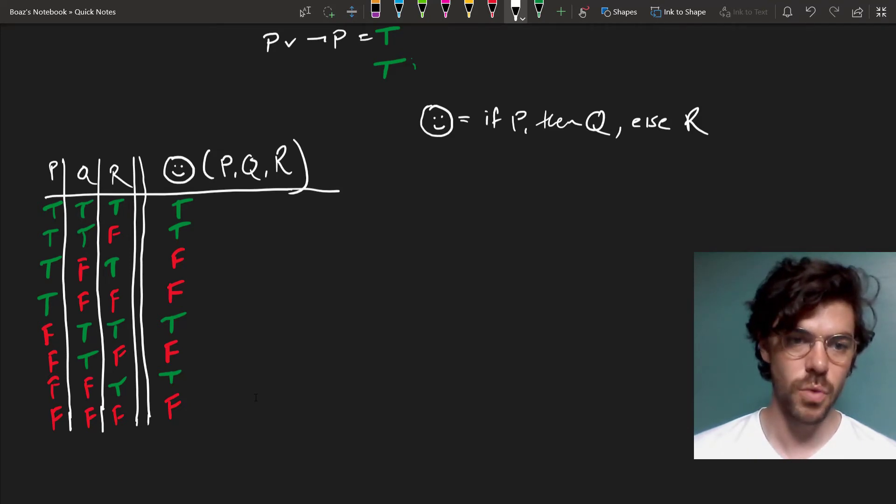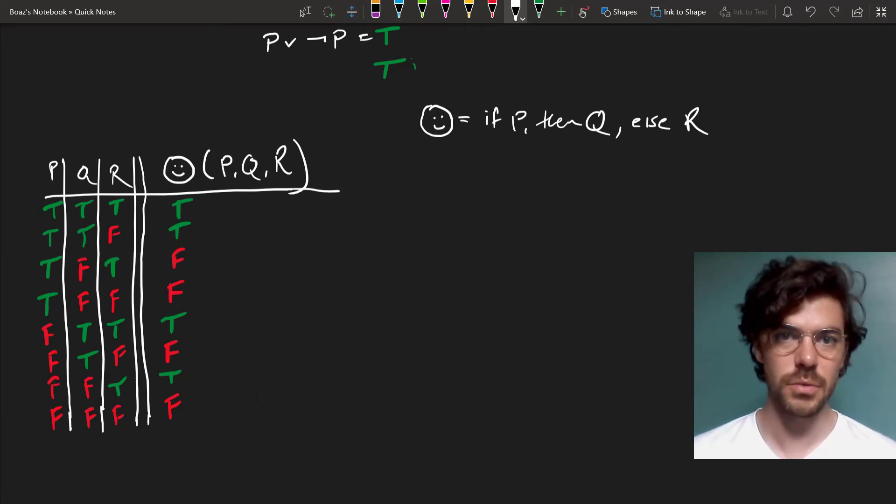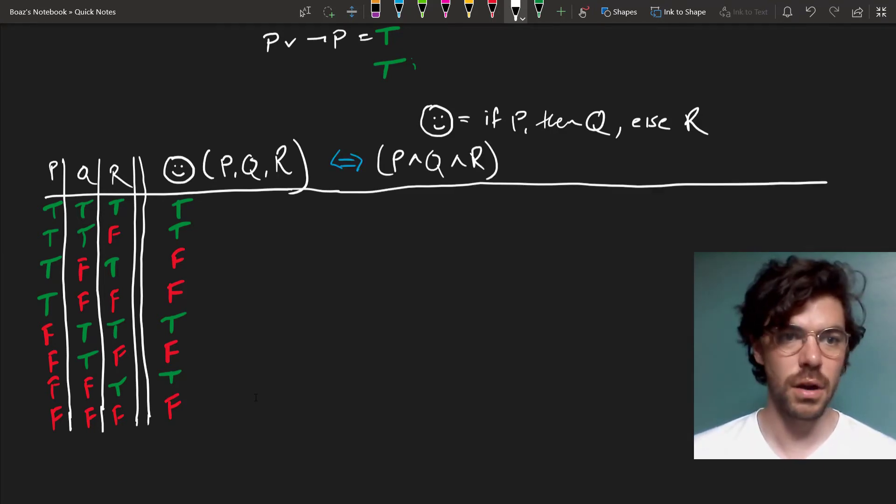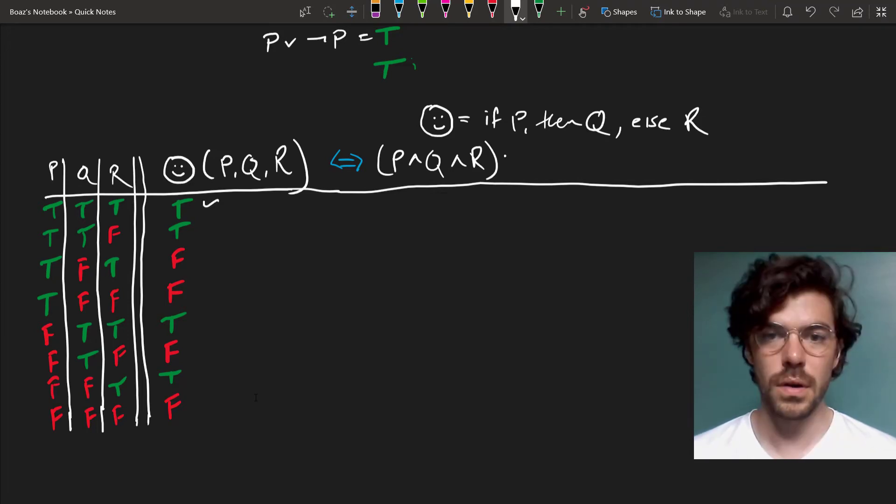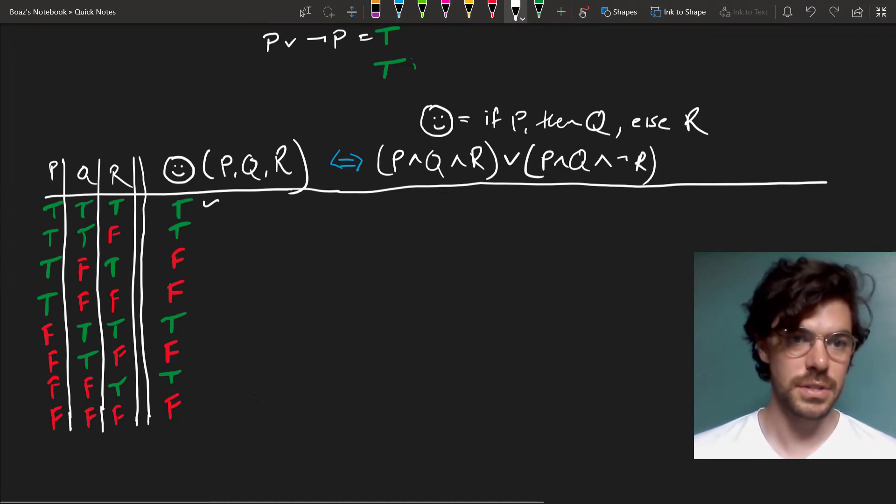And we can provide a disjunctive string of sentences that gets us each of the truth values we want, which we can of course number one through eight here, the way we did with one through four above. So it turns out that smiley face is equivalent to P and Q and R, which gets us our first row, or P and Q and NOT R, which gets us our second row,